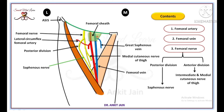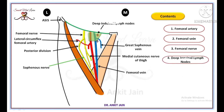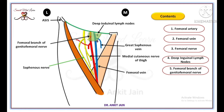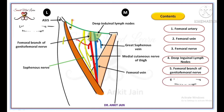At the apex of the femoral triangle, the saphenous nerve enters the adductor canal. Some deep inguinal lymph nodes are found medial to the upper part of the femoral vein. The femoral branch of the genitofemoral nerve occupies the lateral compartment of the femoral sheath along with the femoral artery.